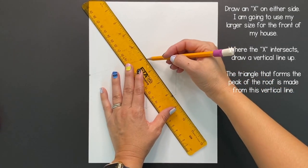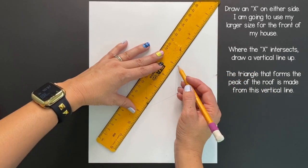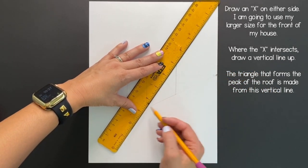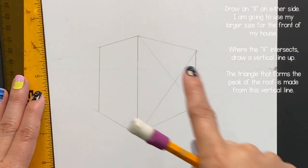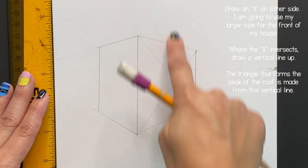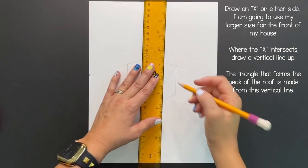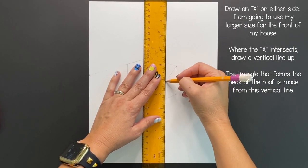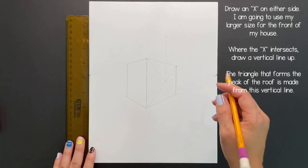Next we're going to draw an X. This is going to help us figure out where the top of our roof should be. Draw it lightly. Where those lines intersect or crisscross you're going to draw a straight vertical line up. That is where the triangle is going to form for the peak of our roof.